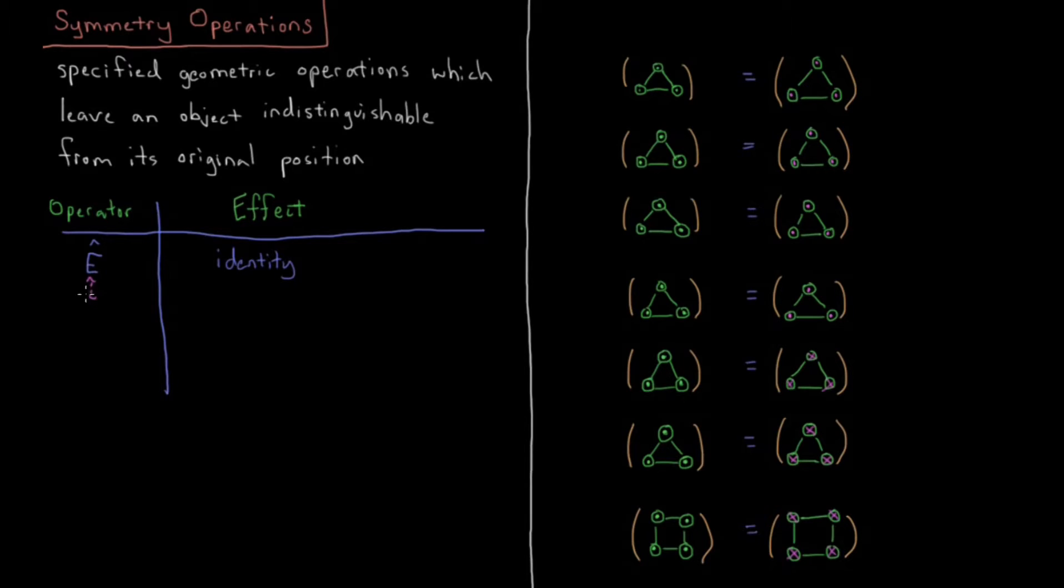Next one is i, so it's a little lowercase i, same as the square root of minus one, although that's not what it means. This is inversion. So i is inversion through a point. And usually that point is going to be the center of mass of whatever molecule we're talking about if we're talking about a molecule.